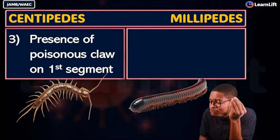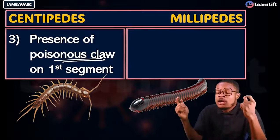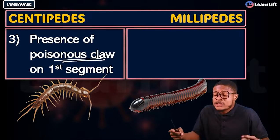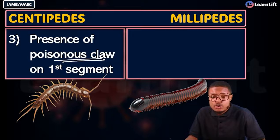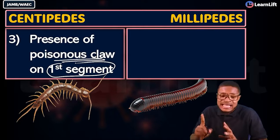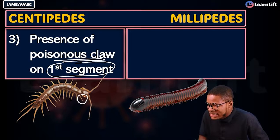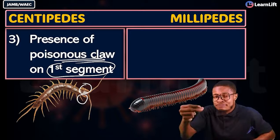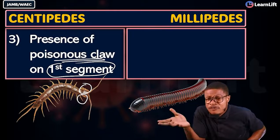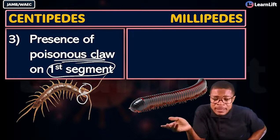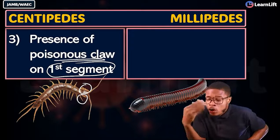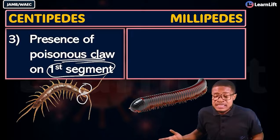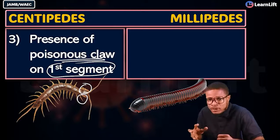In centipedes, there are poisonous claws — called fangs, forcipules, or poisonous claws — located on the first body segment. These are used to inject venom into prey or predators. Centipedes use these as a defense mechanism. They are also very agile and can carry out detachment — breaking off part of their body to escape predators.